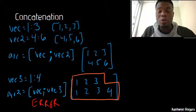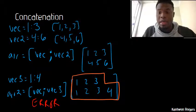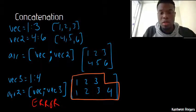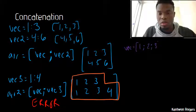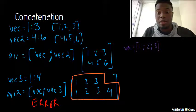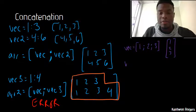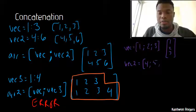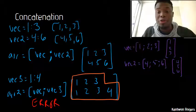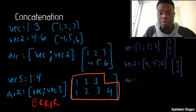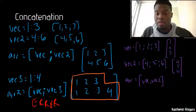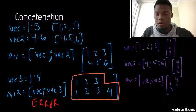To create arrays I don't just have to vertically concatenate row vectors — I can also horizontally concatenate column vectors. So let's say I had a vector that was one, two, three using semicolons, making it a column vector, and I have two such column vectors. If I want to create an array I can horizontally concatenate them: array equals vec and vec2. What I would get back is an array that is one, two, three, four, five, six.